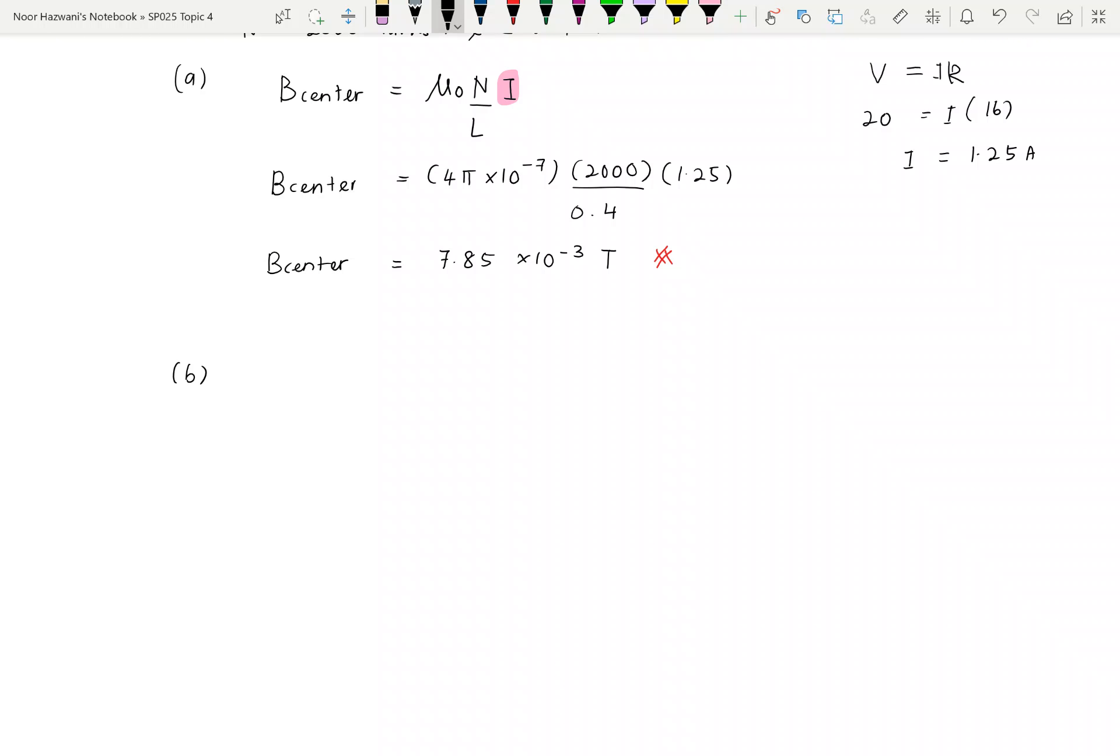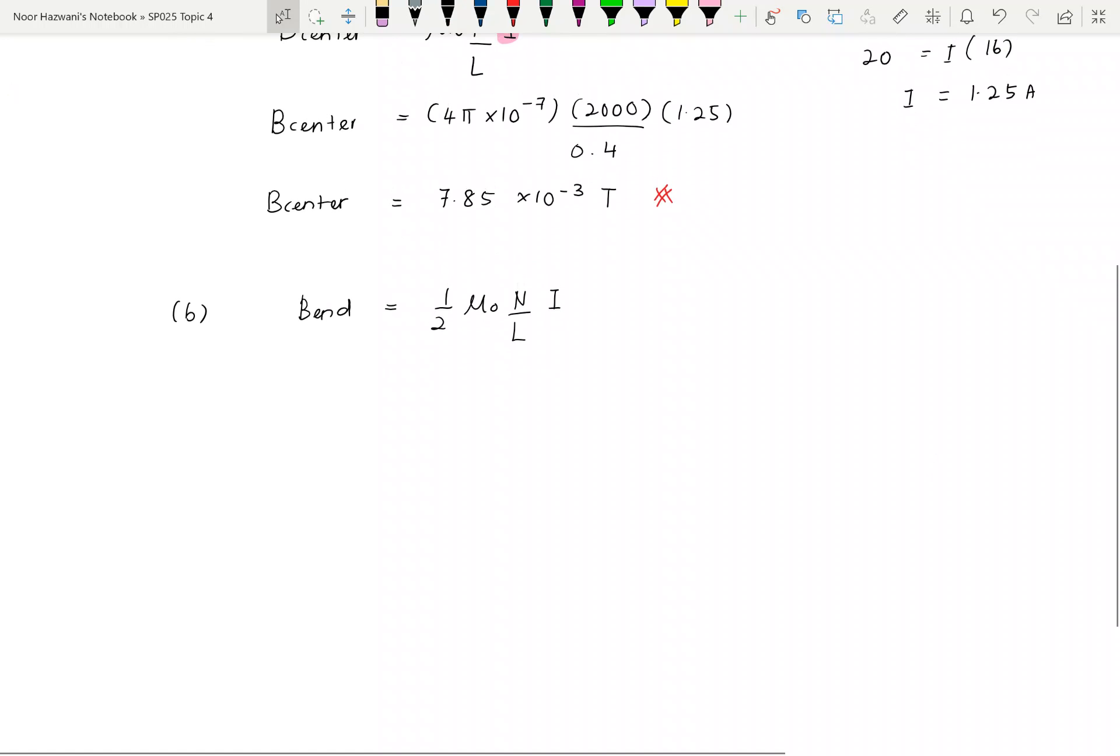So sekarang dia bagi kita adalah BN. So BN is equals to half mu naught capital N over L and then you time with I. And then it asking actually for the number of turns. So you plug in all the value that we know.